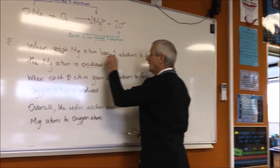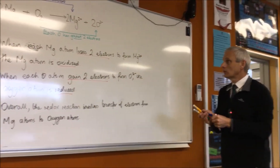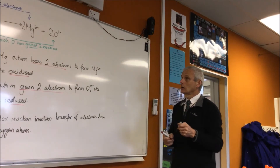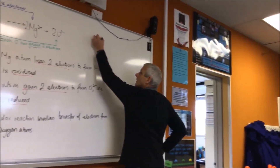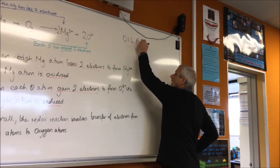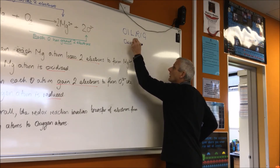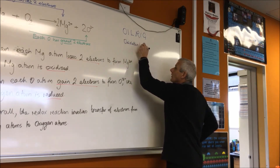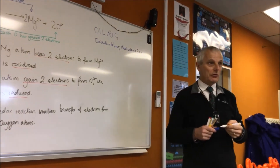Oxidation is loss of electrons. Reduction is gain of electrons. We have a nice acronym — the easy one is OIL RIG. It's really important you get those the right way around, otherwise everything else in this topic will be wrong.